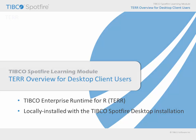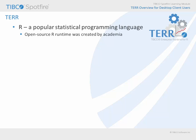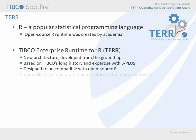Let's begin with an introduction to TERR. You need to understand that R is a statistical programming language which is broadly applied by data analysts and data scientists toward a wide variety of industry and academic endpoints. However, because this open-source tool has its roots in academia and was not intended for high-performance production applications, TIBCO designed an enterprise-grade statistical engine to be fully compatible with the R language, which provides a high-performance solution with more robust memory management than open-source R.